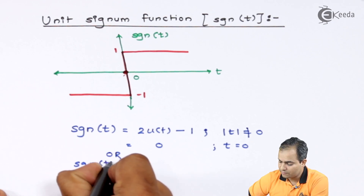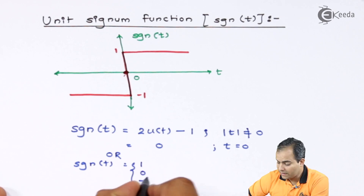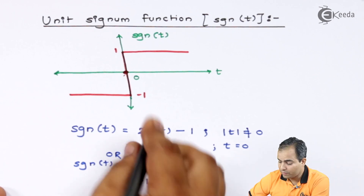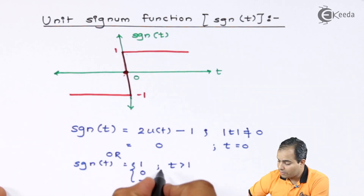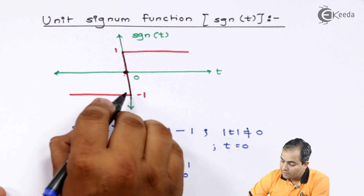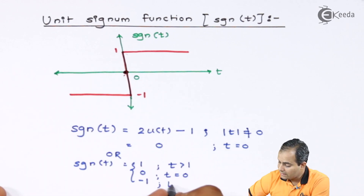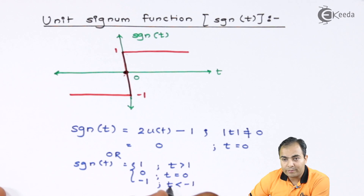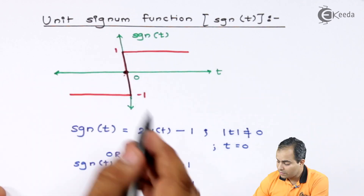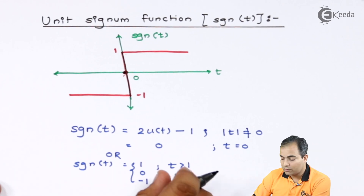One more way to write this equation: the signum function is having amplitude 1, 0, or minus 1. For t greater than 0 it is having amplitude 1. For t equals to 0 that amplitude is 0. For t less than 0, it is having amplitude minus 1. For t equals to 1 and t equals to minus 1 the amplitude is 1, so we write greater than equals to and less than equals to.